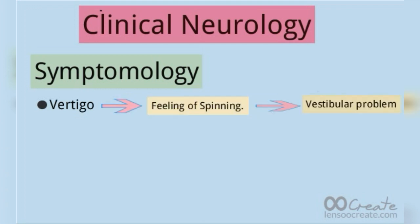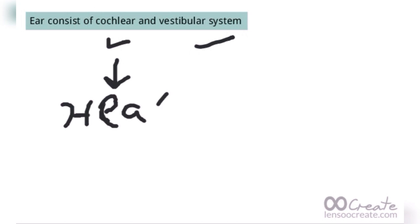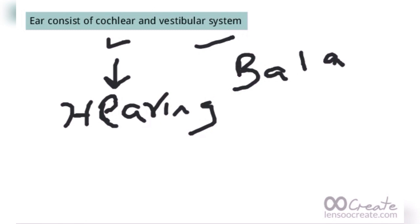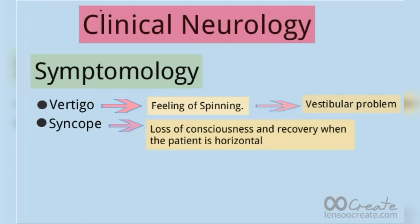The common cause of vertigo is a vestibular problem. As you all know, our ear consists of the cochlear and vestibular system. The cochlear system is concerned with hearing and the vestibular system is concerned with balance. In vertigo, there is a problem in the vestibular system.